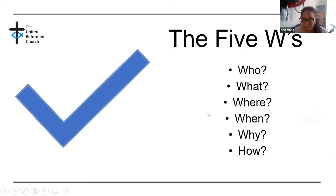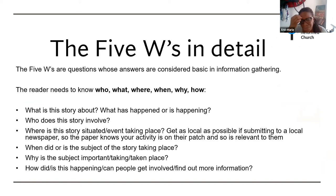So the five W's — we looked at this last time. The five W's are really six things: who, what, where, when, why and how. In detail, the five W's are questions whose answers are considered basic in information gathering.